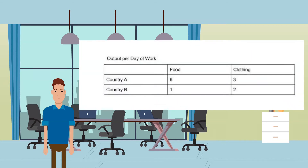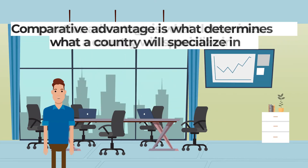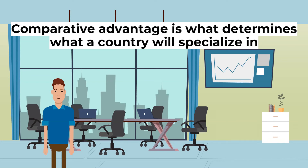For example, the opportunity cost of producing one unit of clothing is two units of food in country A, but only 0.5 units of food in country B. Since the opportunity cost is lower in country B, country B has a comparative advantage in clothing. Even though country A has an absolute advantage in both food and clothes, it will specialize in food while country B specializes in clothing. Absolute advantage is important, but comparative advantage determines what a country will specialize in.